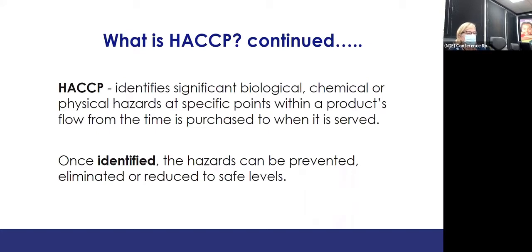HACCP identifies significant biological, chemical, and physical hazards at specific points within a product's flow through the kitchen — from the time you purchase it to the time it's served. We look at everything that could affect the food and make it unsafe. Once those hazards have been identified, they can be prevented, eliminated, and reduced to safe levels.